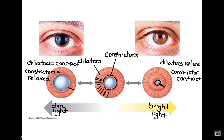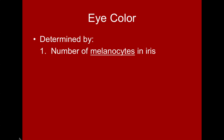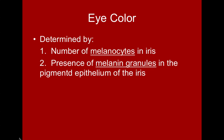These are the two extremes — all along the middle range of light exposure, the pupil size is somewhere in between. Eye color is determined by a combination of things: the number of melanocytes present in the iris and the presence of melanin granules in the pigmented epithelium of the iris.